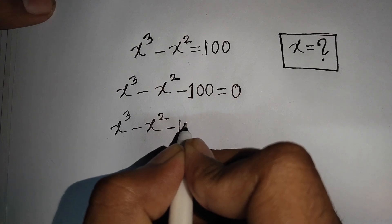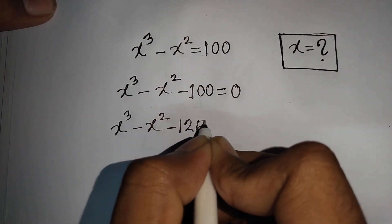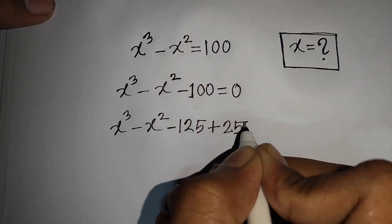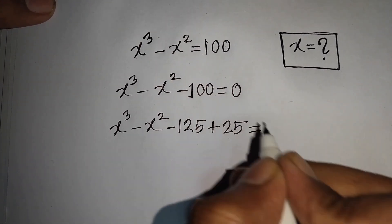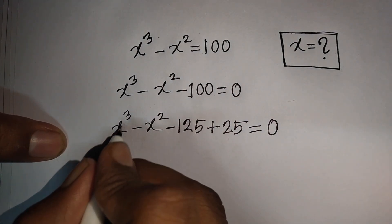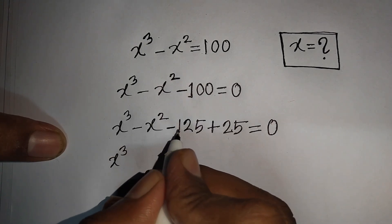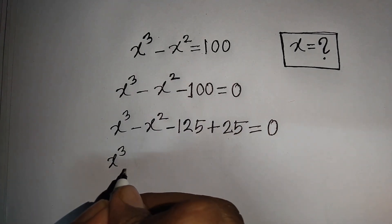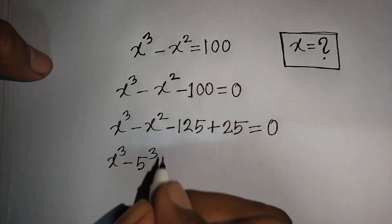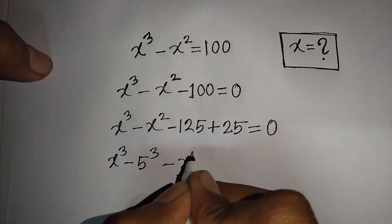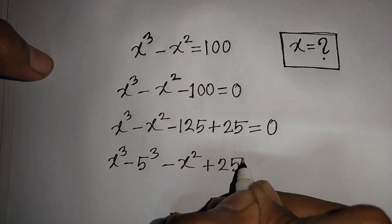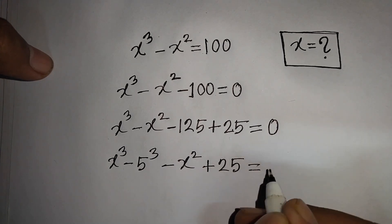...minus 125 plus 25, equal to 0. We now have x³, and minus 125 can be written as minus 5³, then minus x² plus 25, equal to 0.